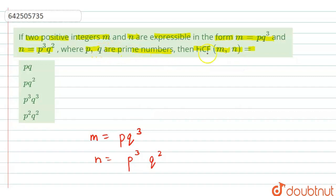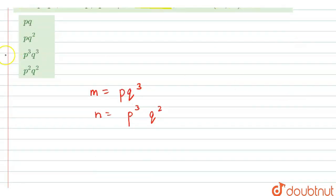They are telling us P and Q are prime numbers. So, HCF - what is HCF we should be knowing? HCF is the highest common factor.